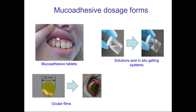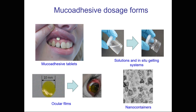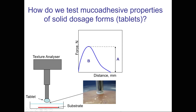Alternatively, the polymers could be formulated as soluble films. These films can be used in ocular drug delivery — when placed on the eye they stick to the ocular surface and gradually dissolve, releasing the drug. There are also a number of nanoformulations called nano containers that can be formulated using mucosal polymers, incorporating the drug, sticking to mucosal tissues where administered and gradually releasing the drug.